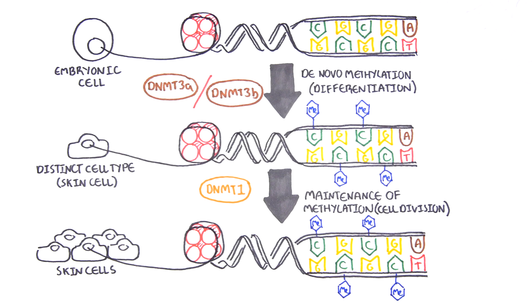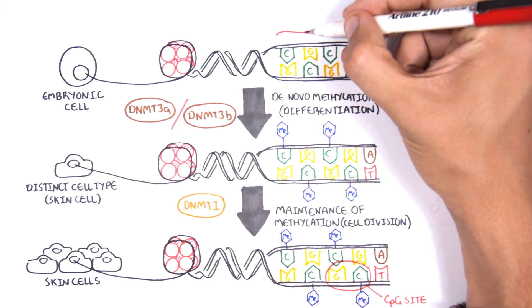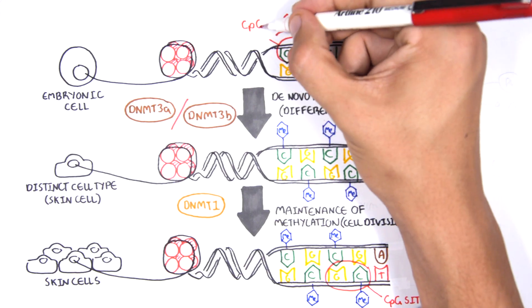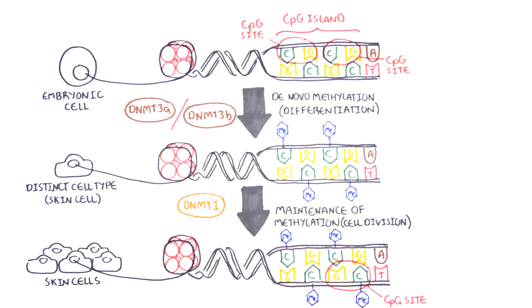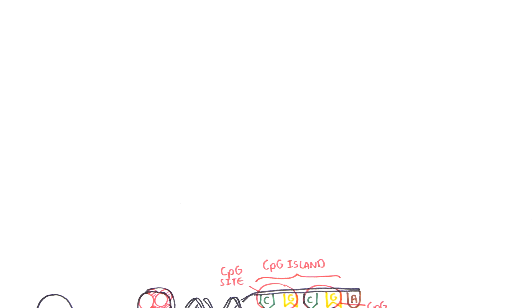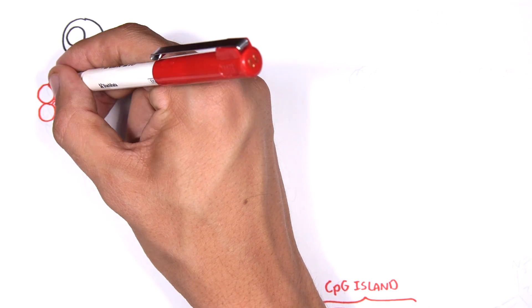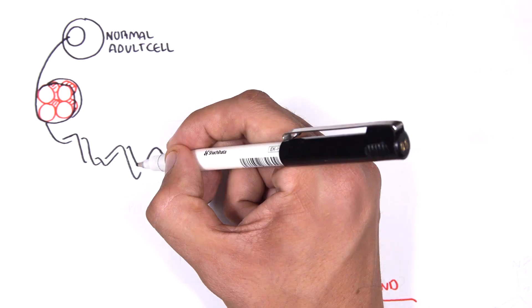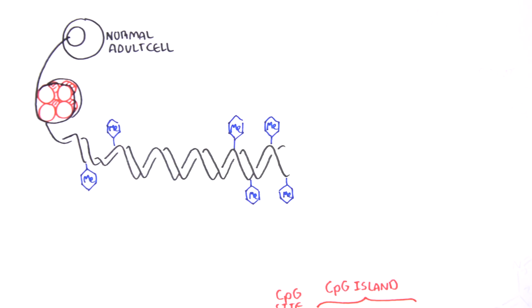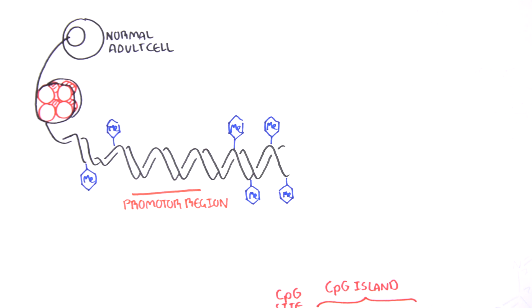Cytosine guanine sites, or CPG sites for short, are found all over our DNA. For example, here we have a CPG island containing many CPG sites. In a normal adult cell, most CPG sites are methylated, except in promoter CPG islands. These CPG sites are typically unmethylated.